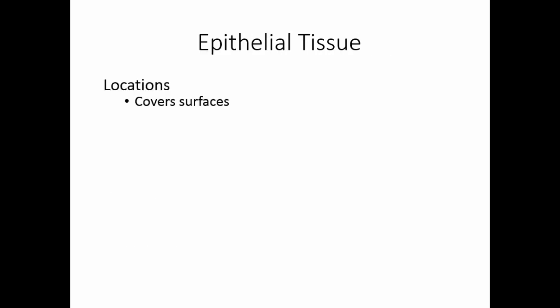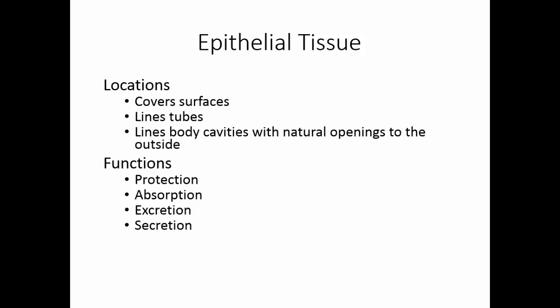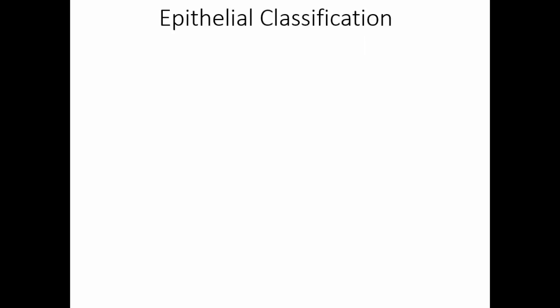Epithelial tissue is found covering surfaces and lining tubes in the body. It lines all of the body cavities that have natural openings to the outside. There are several functions for epithelial tissue. Because it covers and lines, it protects whatever is underneath it. It may be involved in absorbing material from the outside of the body to the inside.